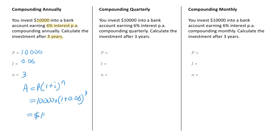That gives a value of $11,910.16. Remembering that this is the total amount of the investment over three years — it's the $10,000 invested plus $1,910.16 in interest earned. This question is asking for the investment amount, so we leave it at $11,910.16. But if the question asked for the interest amount, you would subtract your starting amount of $10,000 from $11,910.16.